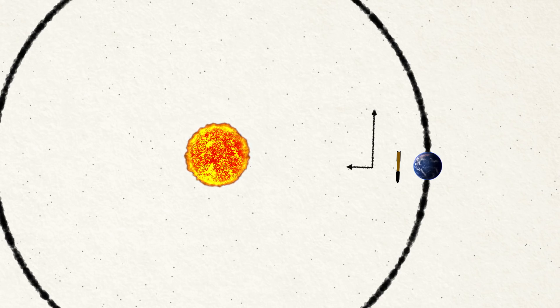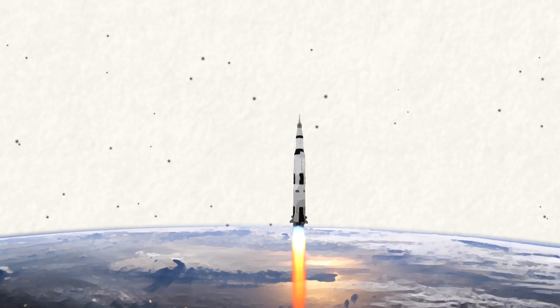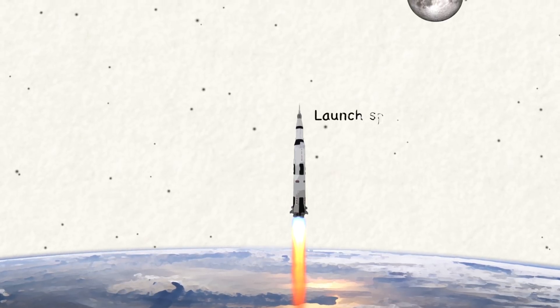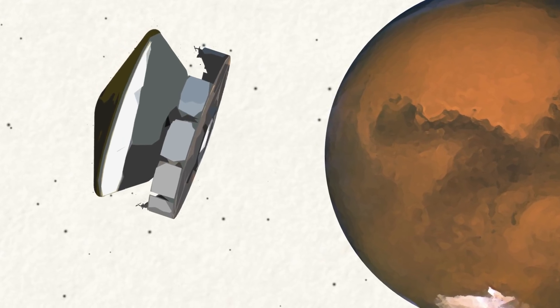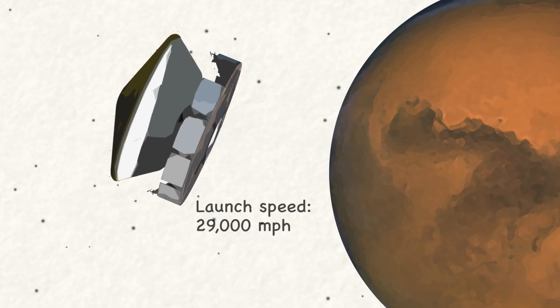To cancel Earth's motion, you have to launch the spacecraft backward as fast as Earth is hurtling forward. But 67,000 miles an hour is really fast. Spacecraft have to go upward at only 25,000 miles an hour to escape Earth. Getting to Mars only requires a bit more speed, 29,000 miles an hour.